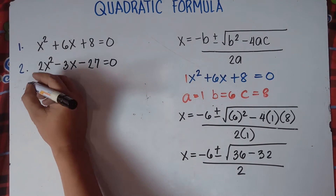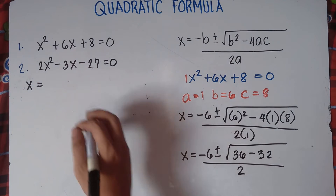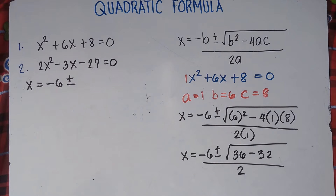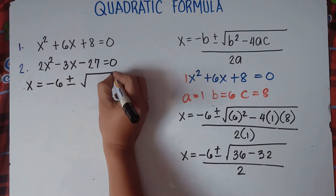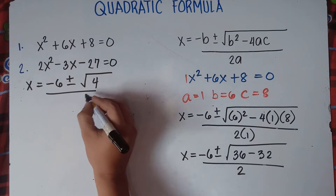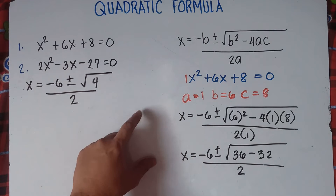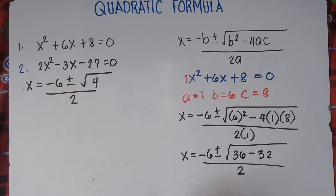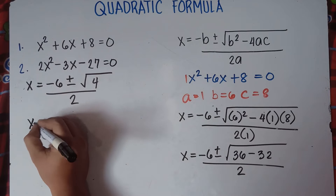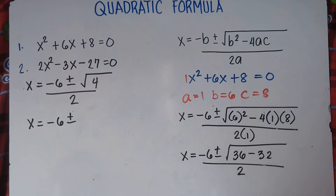So this simplifies to x = −6 ± √(36−32) all over 2, which is x = −6 ± √4 all over 2. In Part 1, our answer inside the square root is a perfect square. Is 4 a perfect square? Yes — when we take the square root of a number and get a whole number, it is a perfect square. The square root of 4 is 2, because 2 times 2 equals 4. So we have x = −6 ± 2 all over 2.